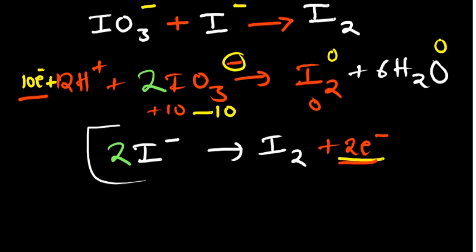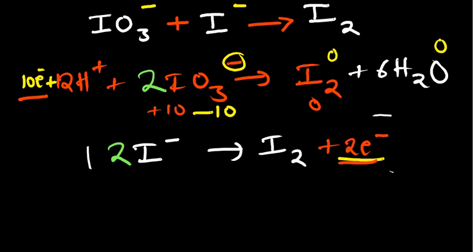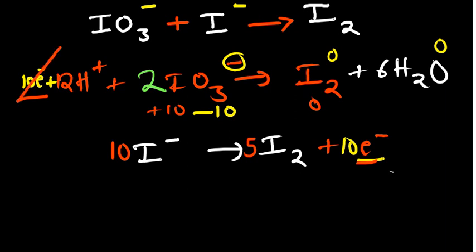Now we need to balance the number of electrons in the two half reactions. The first half reaction has ten electrons and the second has two. We multiply the second half reaction by five, so the coefficient two becomes ten, and the two electrons become ten electrons. Since they are on opposite sides, the electrons cancel out — being lost in the oxidation reaction and gained in the reduction reaction. That is what redox is all about.